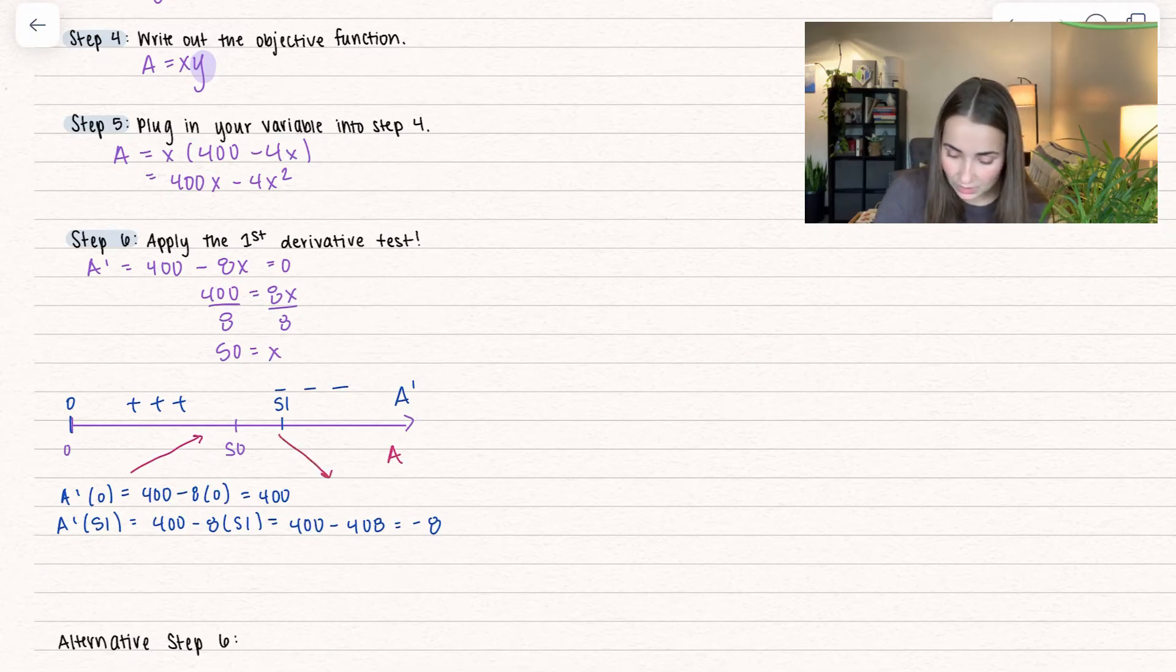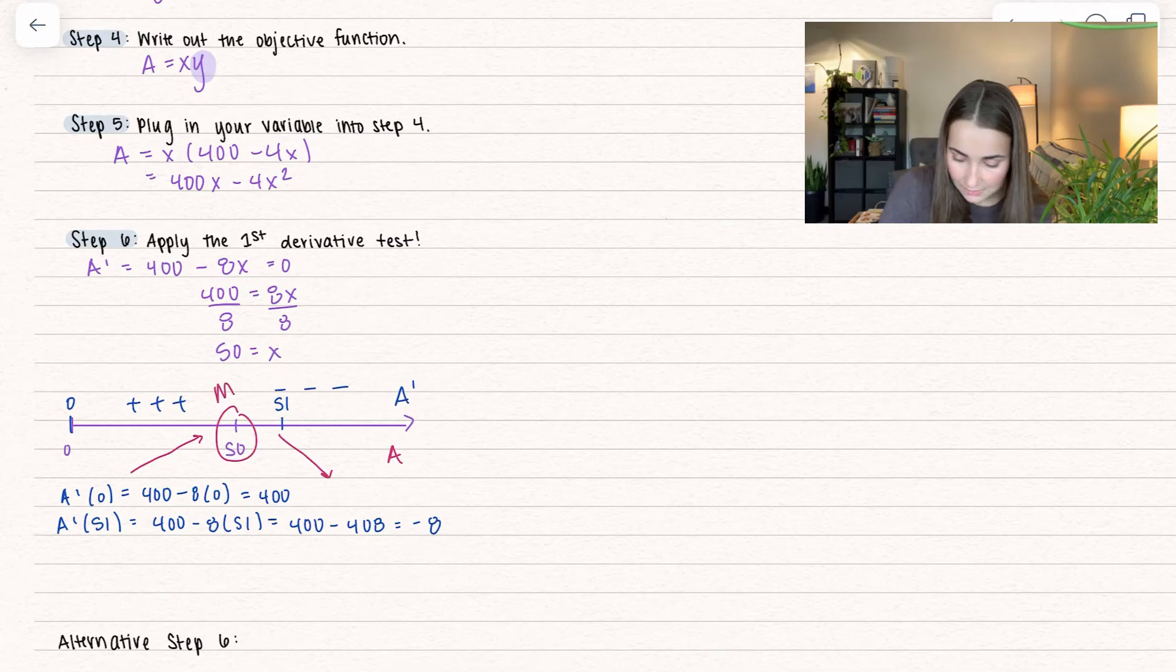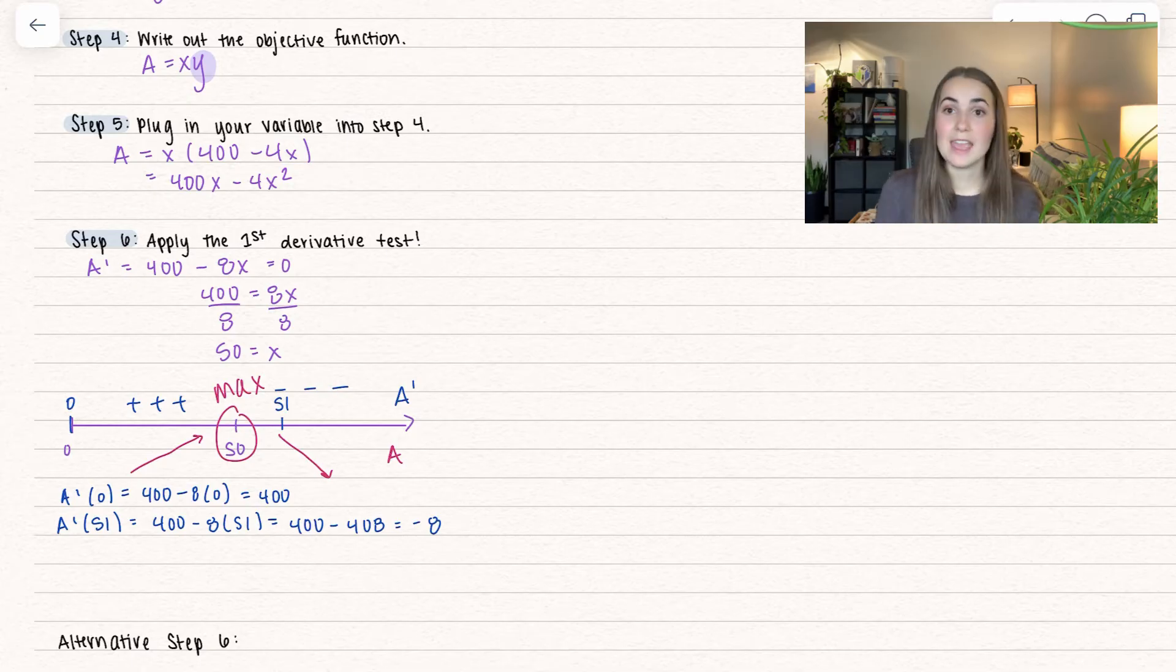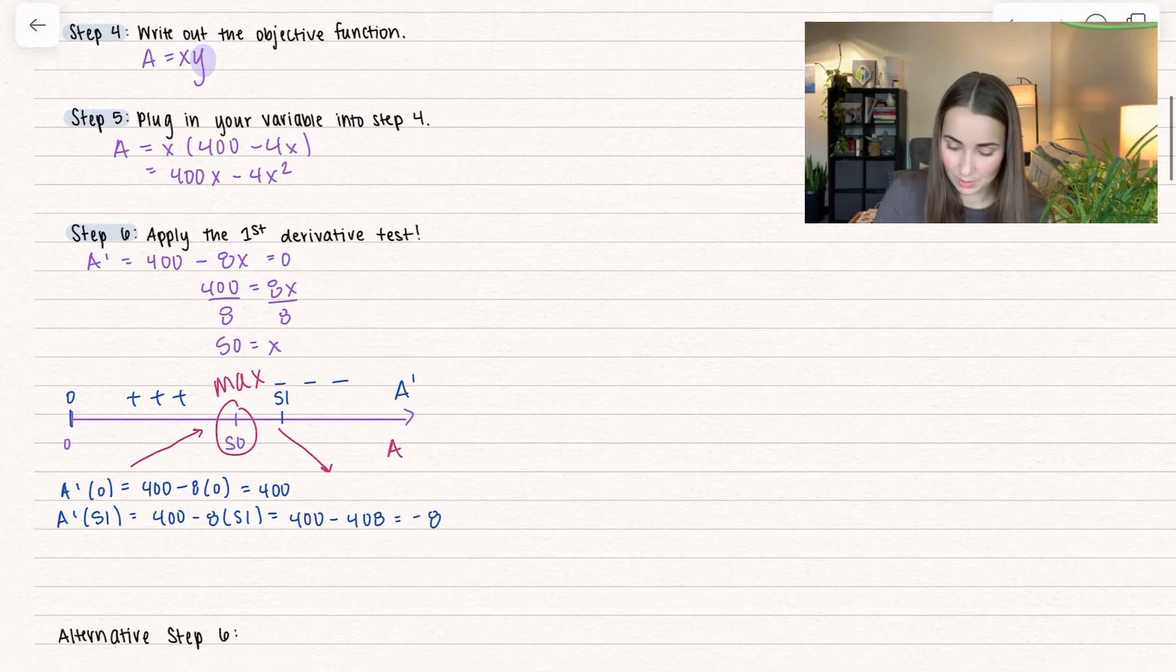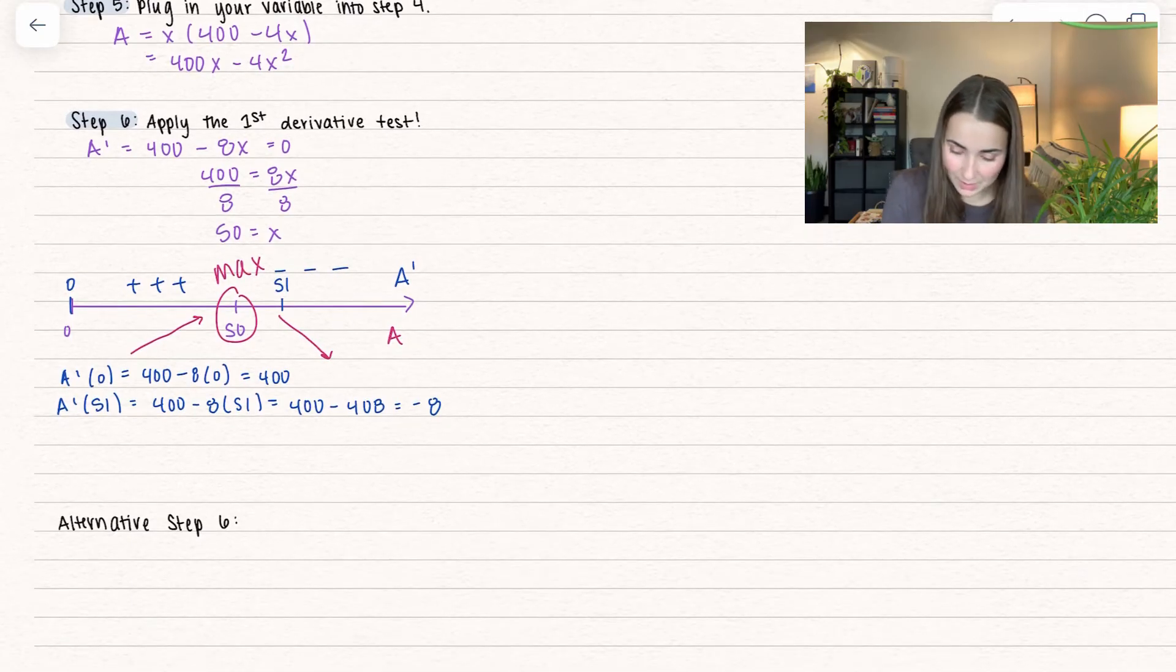As we can see, we have a relative maximum at 50. Actually, we can argue this is the absolute maximum because it's the only local extrema and it goes something like this. There's no other places where we can have a maximum. So it is optimized at 50.